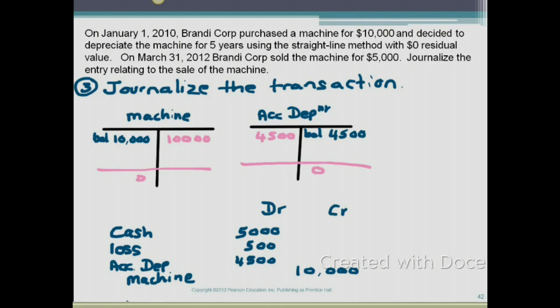The journal entry to record a sale of an asset will always have four items: cash (the amount received), a gain or loss (calculated by comparing sales proceeds to book value), the removal of accumulated depreciation, and the removal of the asset from your books. In this example we had a loss, so we debited it. If there is a gain, you credit the gain. For debit/credit rules: treat a loss just like an expense — losses have normal debit balances. Treat a gain just like revenue — gains have normal credit balances.